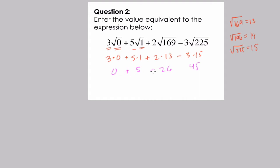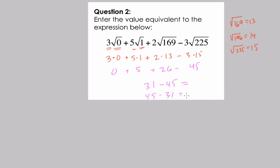Now we just add and subtract using order of operations: zero plus five plus twenty-six is thirty-one, minus forty-five. To handle this, compute forty-five minus thirty-one, which is fourteen, then reverse the sign. The answer is negative fourteen.